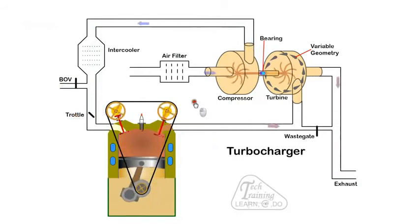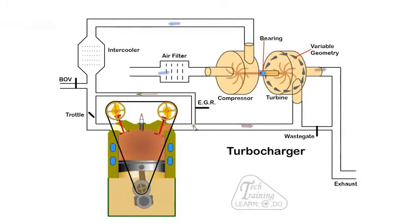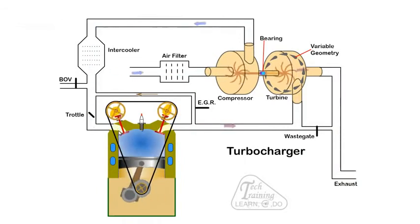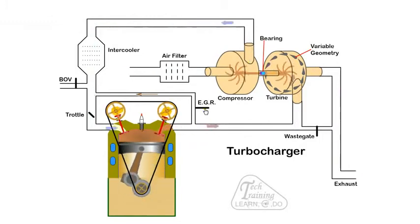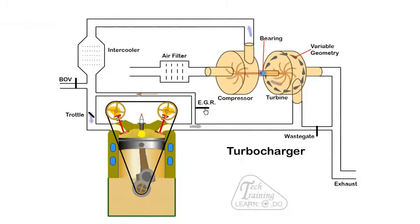Exhaust gas recirculation recirculates a small amount of exhaust gas back to the inlet under certain operating conditions. This reduces the amount of oxygen in the charge and helps to reduce combustion temperatures and emissions.